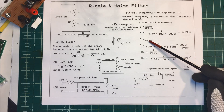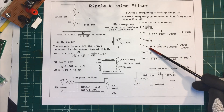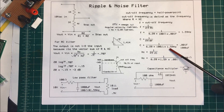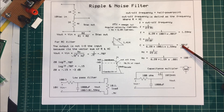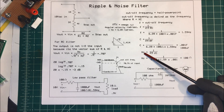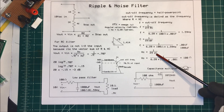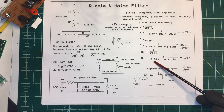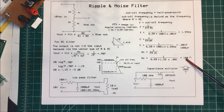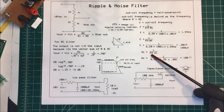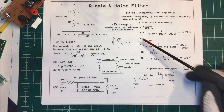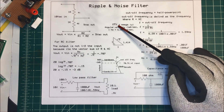So if we take 6.28 times 100 times 0.001, it comes out to 1.59 Hz. Now if we know the frequency we want and the resistance, we can find the capacitance: 1 over (6.28 times 100 times 1.59) comes out to 0.001 farads, or 1000 microfarads. We can also find the capacitive reactance if we know the frequency and the capacitance — multiplying those together gives 100 ohms.